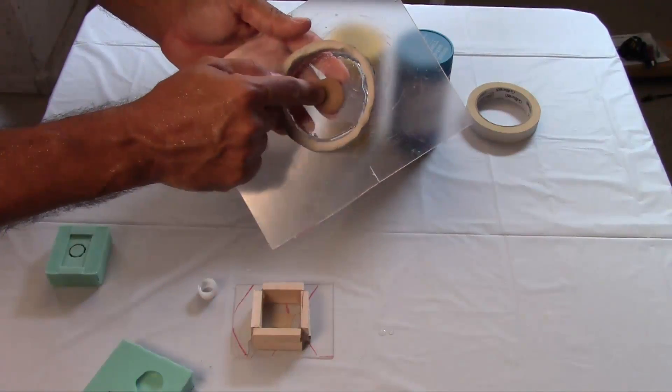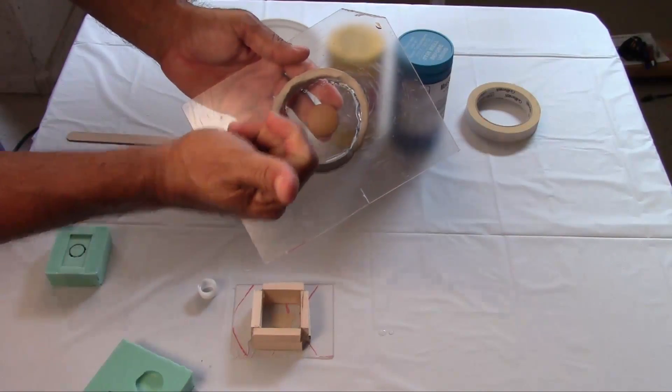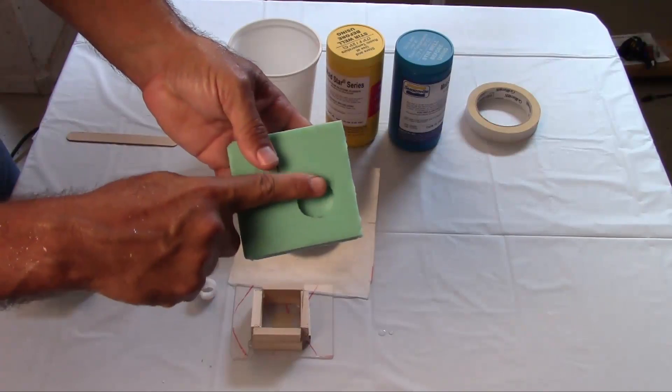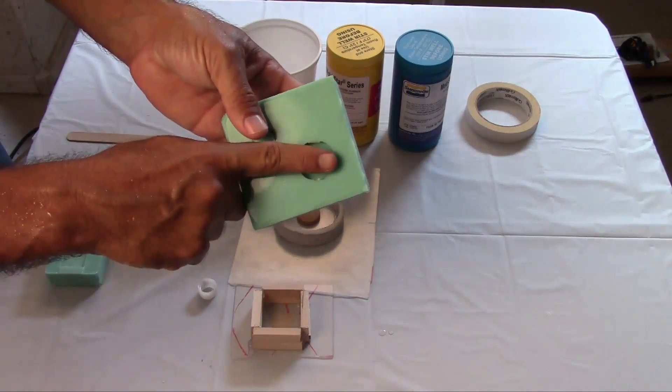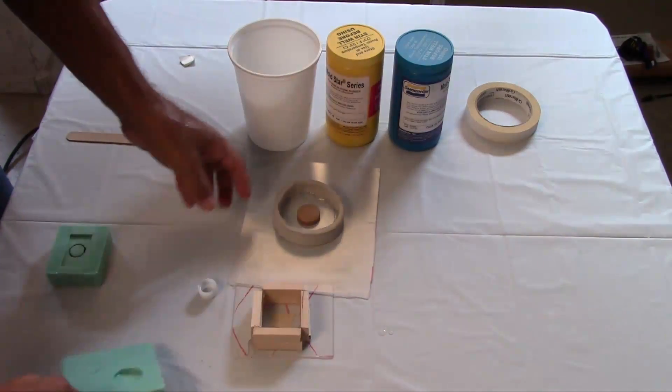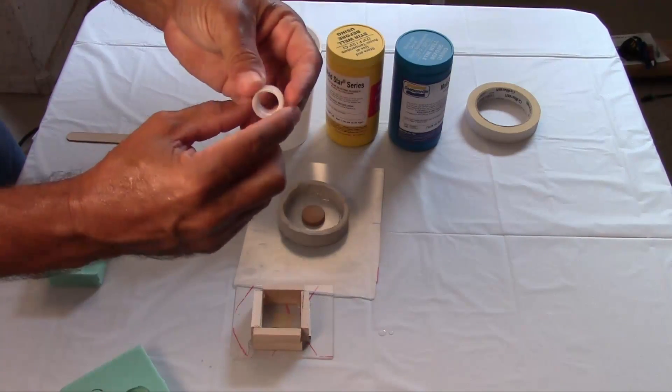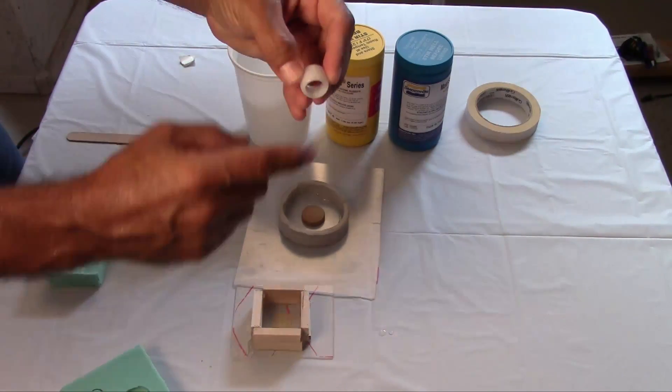If you notice, I have the top of the cap pointed to the top just like I have here so that when I pour the material in, this is going to be the bottom surface. And then for this ferrule, because this again is going to be the bottom surface, this will be the top.